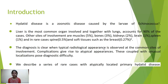The diagnosis is clear when typical radiological appearances are observed at the common sites of involvement. Complications may give rise to atypical appearances, and these coupled with unusual localizations pose diagnostic difficulty. Here we describe a series of rare cases with atypically located primary hydatid disease.